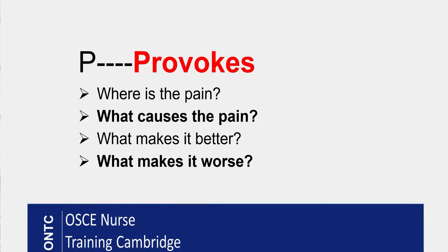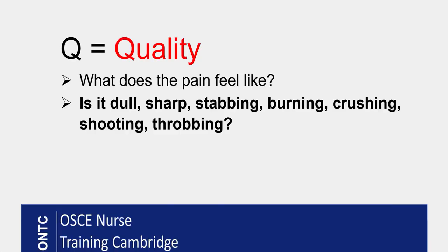For P, which is for Provokes, the first thing is to ask your patient where the pain is and also the reason for the pain if your patient knows. The third thing will be what makes it better and what makes it worse — what provokes it. We need to know all of that, so that's all about P.